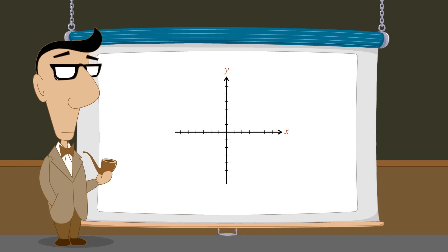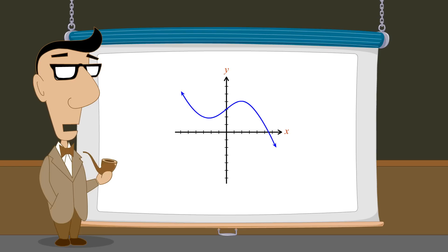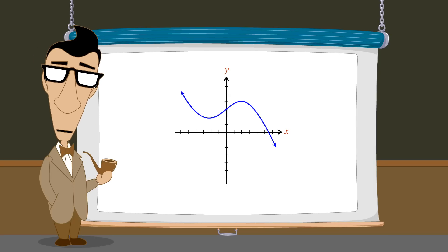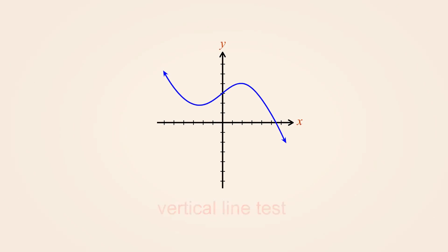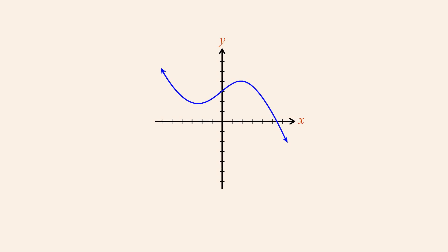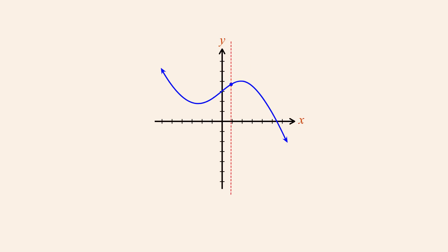There are an infinite variety of real-valued functions of a real variable, and the graphs of these functions can have any imaginable shape as long as each value in the domain maps to only a single value in the range. An easy way to test for this condition is the vertical line test. Since each x-value in a function's domain must map to no more than one y-value in its range, a vertical line drawn at any position on the x-axis must intersect the graph at no more than one point.